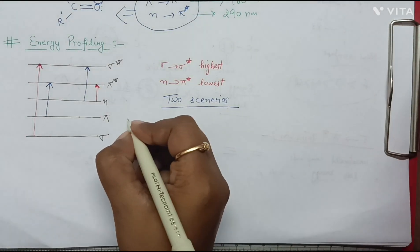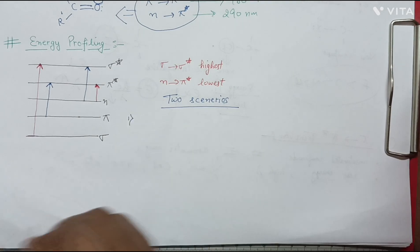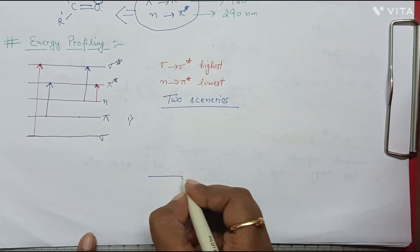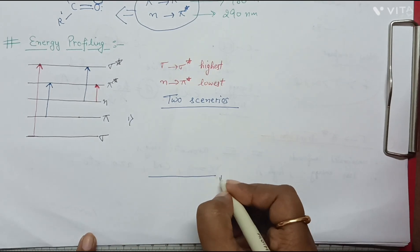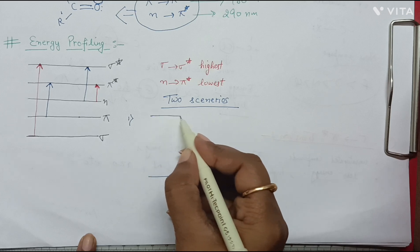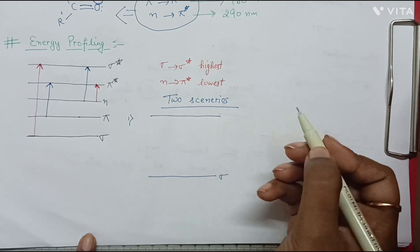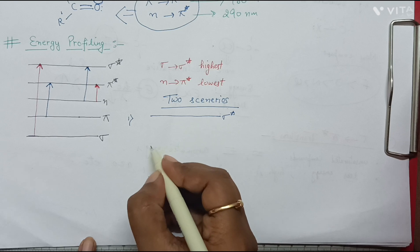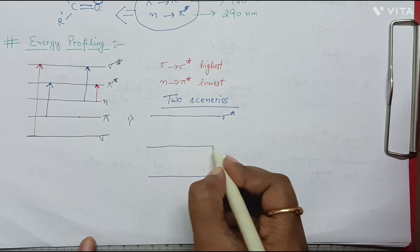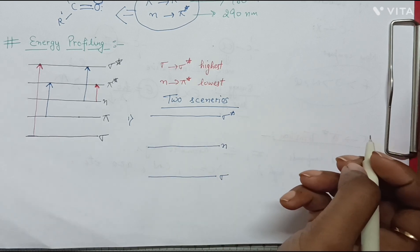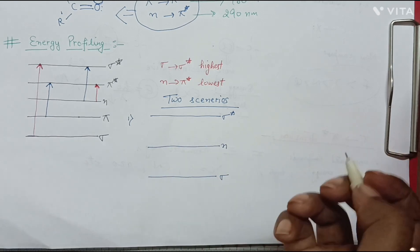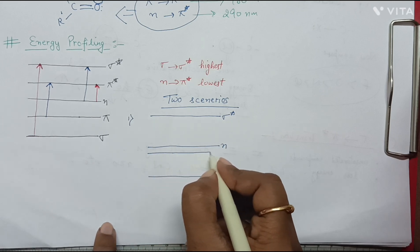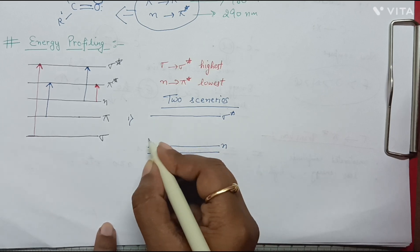In the first scenario, suppose we have sigma at the bottom and sigma star at the top, with non-bonding (n) in between. Now pi and pi star lie near to the non-bonding level.